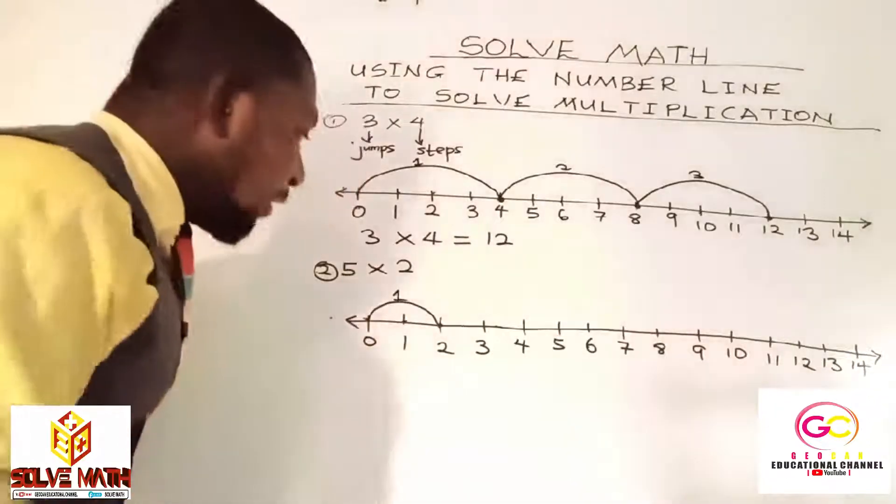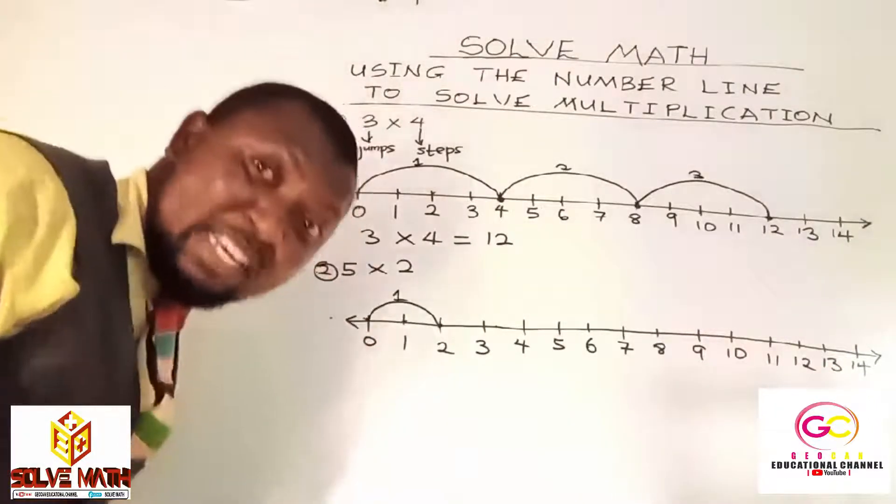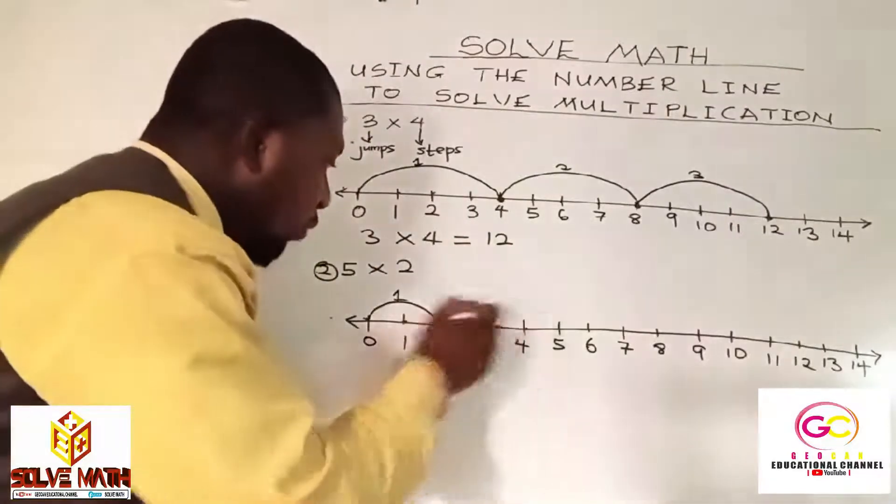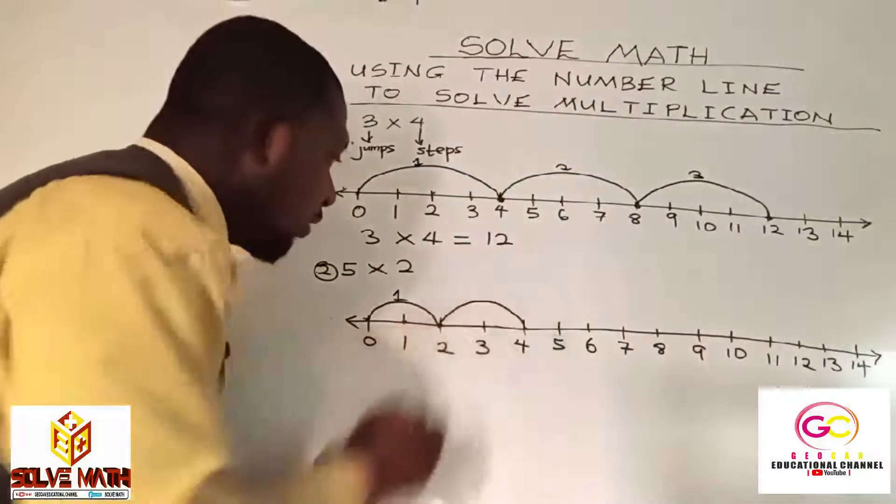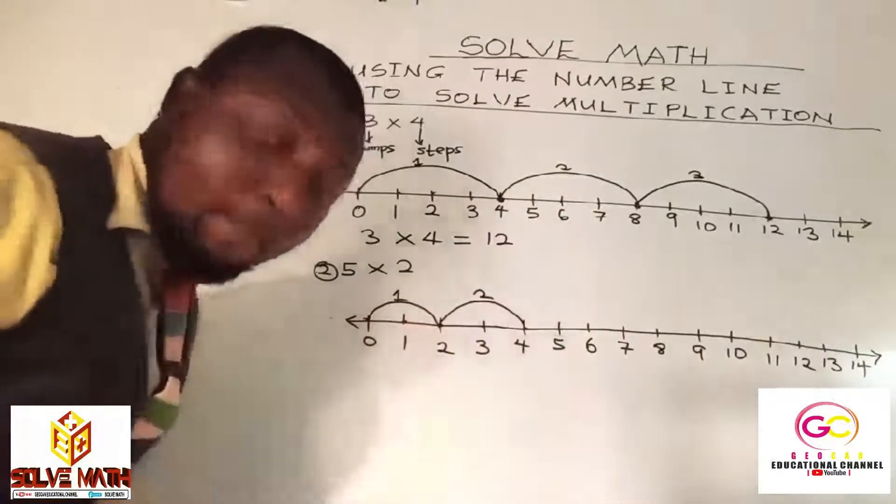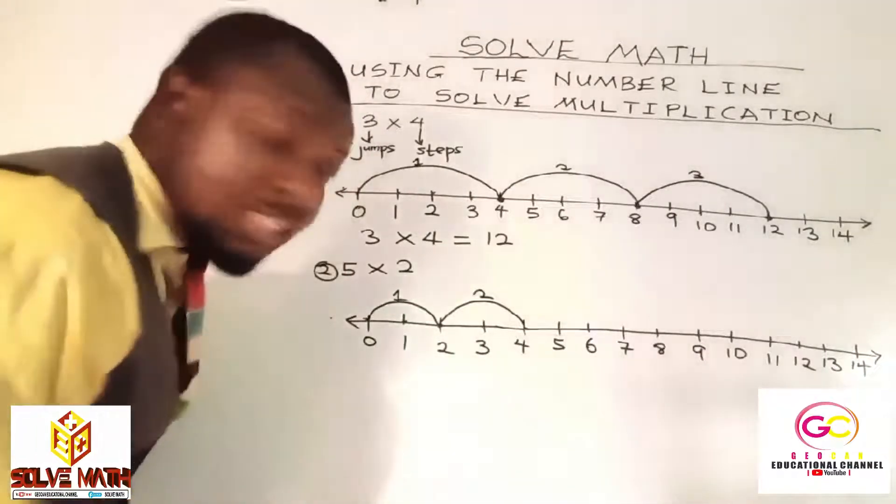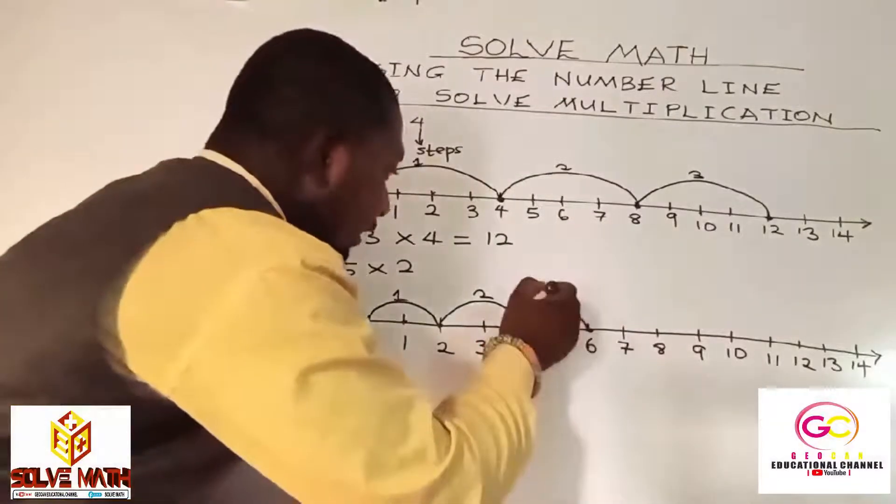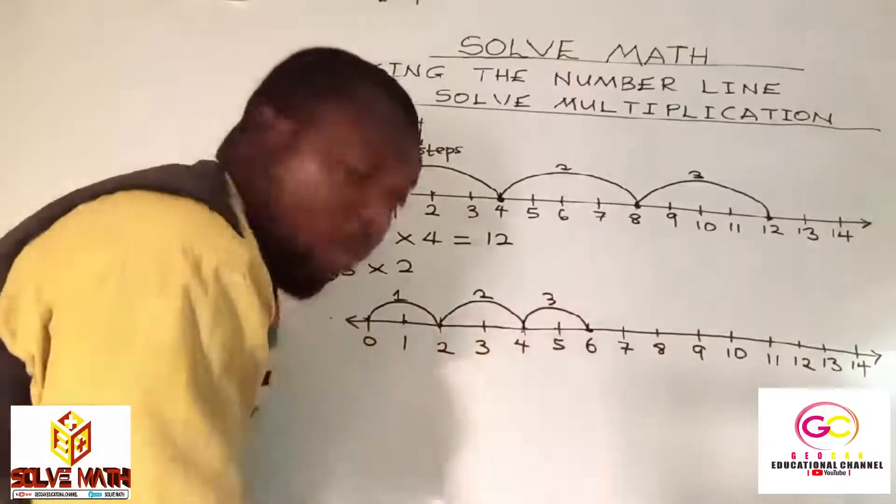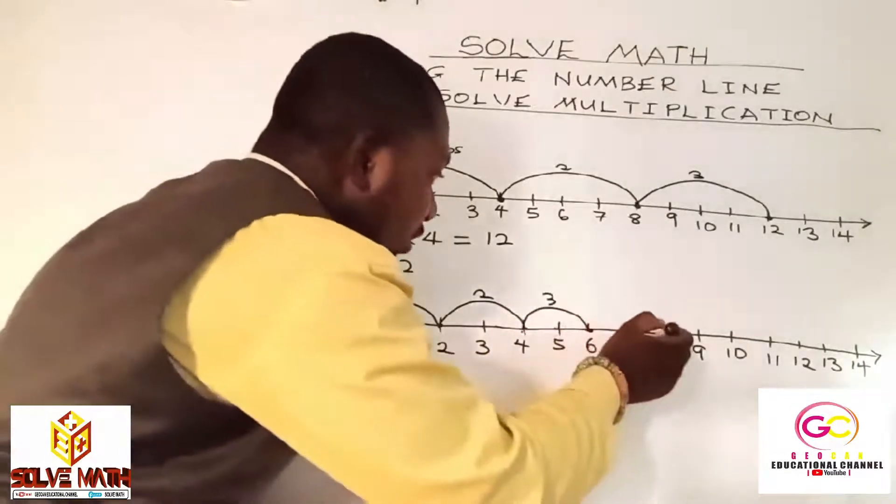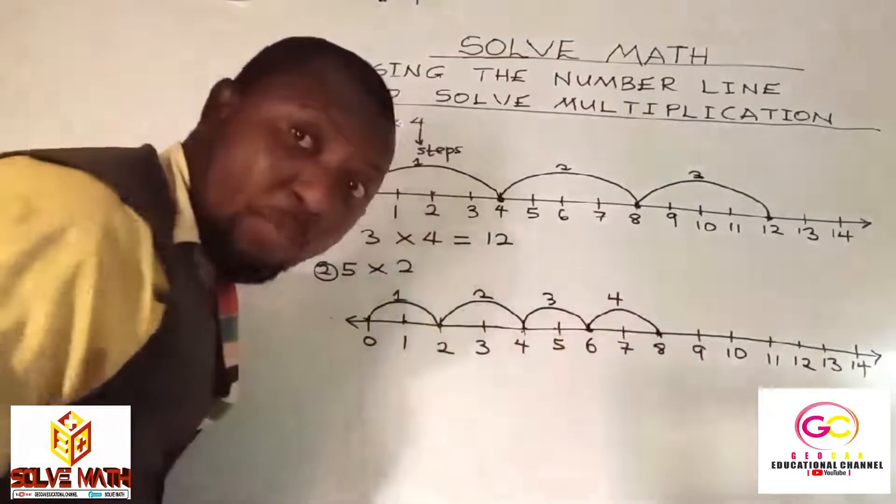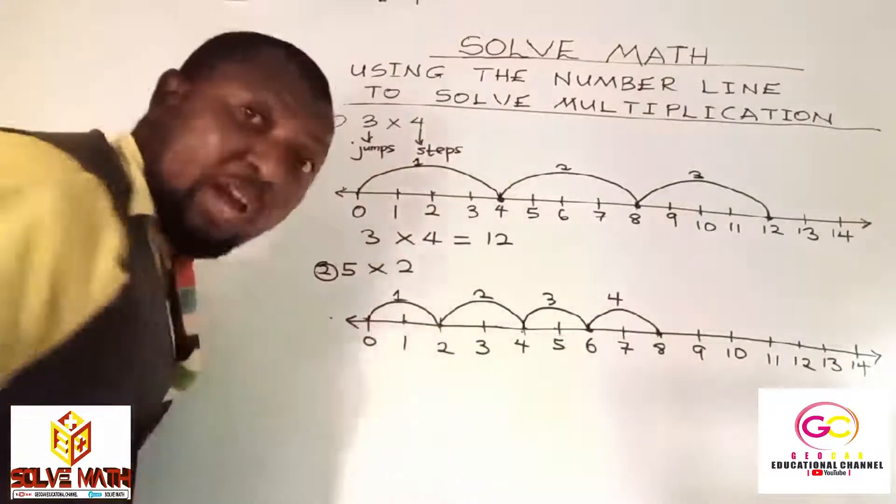Let's move on to the second jump. And in each jump, we need how many steps? Two steps. Good for saying that. So, one, two. So, you move from here to here. So, this is our second jump. Remember, five jumps is what we need. So, let's move on to the third one. One, two. This is our third jump. Our fourth one. One, two steps. Fourth step. I hope you are following.